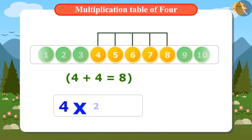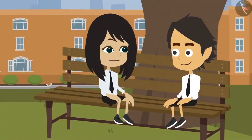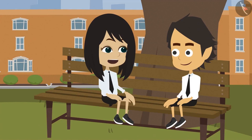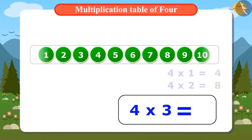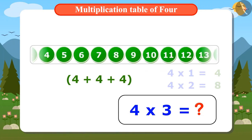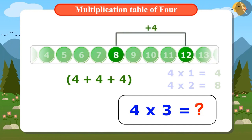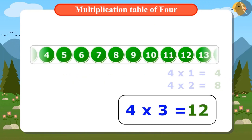That means 4 twos are 8. Now we write the multiplication table of 4 by either of two methods. To find the answer for 3 times 4, either add 4 three times or find the fourth number after 8. The fourth number after 8 is 12. And if we add 4 three times, the answer is also 12. This means 4 threes are 12.